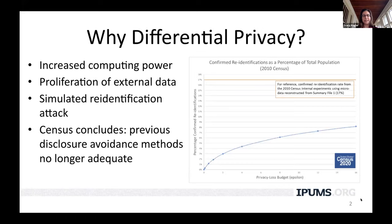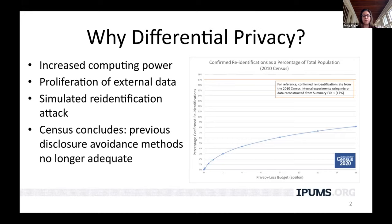Since the 2010 Census, the Census Bureau has become increasingly concerned about disclosure risks, citing increased computing power and proliferation of external data sources like credit bureau sources and administrative data. They are afraid that it is now more possible for attackers to identify individuals from the Census data that are published. In 2017, they conducted a simulated re-identification attack and found they were able to correctly match all characteristics for 17% of individuals in the 2010 Census. They concluded that previous disclosure avoidance methods like swapping and suppression were no longer adequate and that they were going to implement differential privacy for the 2020 Census.